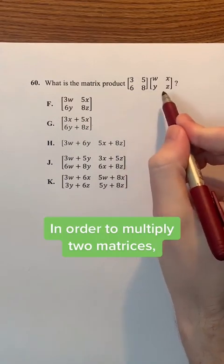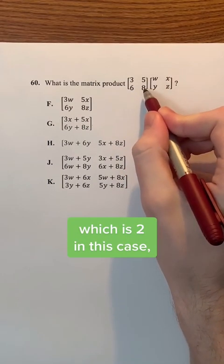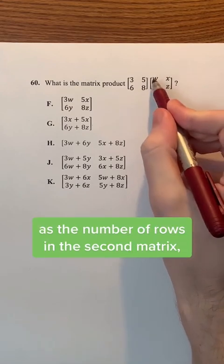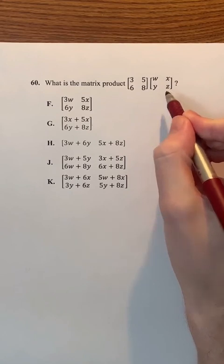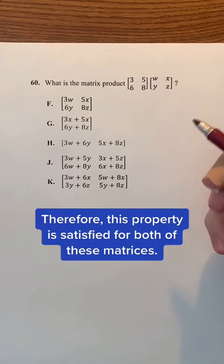In order to multiply two matrices, the number of columns in the first matrix, which is 2 in this case, has to be the same number as the number of rows in the second matrix, which is also 2 in this case. Therefore, this property is satisfied for both of these matrices.